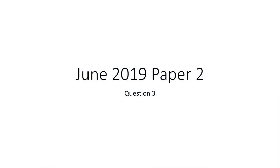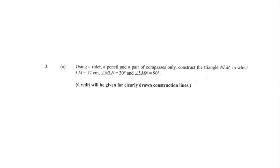Welcome to another video. We'll be working on question 3 from the June 2019 Paper 2. Part 3a says: use a ruler, pencil, and a pair of compasses only to construct the line NLM, where LM equals 12 centimeters, angle MLN equals 30 degrees at point L, and angle LMN equals 90 degrees at point M. I'll first show how to construct a 30-degree angle, then a 90-degree angle.